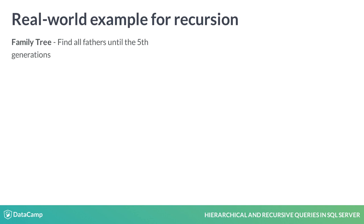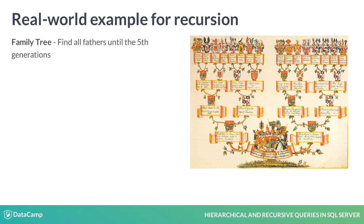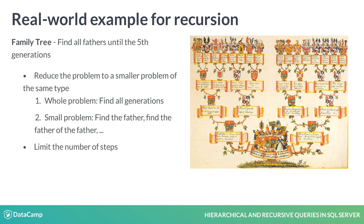A real world example everyone knows is the family tree. Everyone has a father and your father has a father. For example, to find all fathers for the last 5 generations, you can use recursion. You have to reduce the problem to smaller problems of the same type.